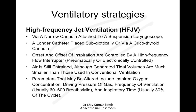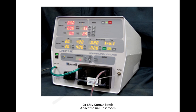The advantage of high frequency jet ventilation is that you can alter the inspired oxygen concentration — the FiO2 — and you can control the driving pressure of the gas and the frequency of ventilation, which can be set between 60 to 600 breaths per minute. You can also choose the inspiratory time — we usually tend to use around 30% of the cycle. This shows a commercially available high frequency jet ventilator where you can control the various parameters.